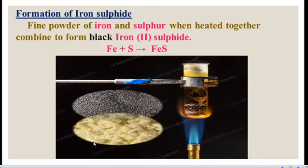Formation of iron sulfide: fine powder of iron was taken and mixed with sulfur. When this mixture is heated together, they combine and produce iron sulfide, which is black in color. Iron combines with sulfur and produces iron sulfide. Therefore, this is also an example of a combination reaction.